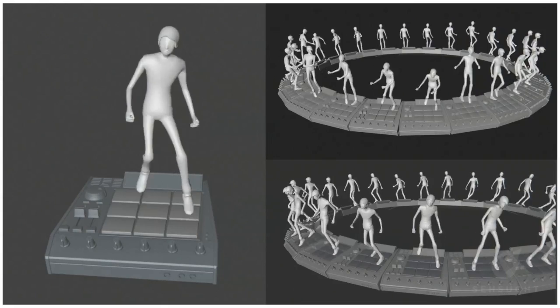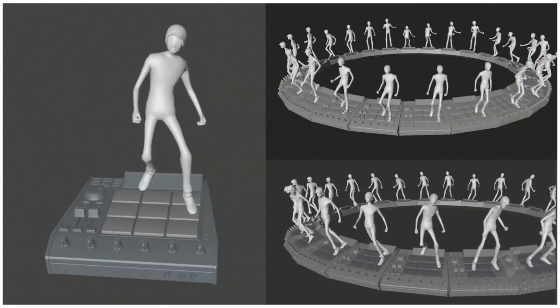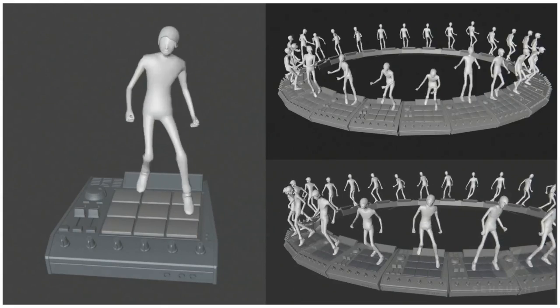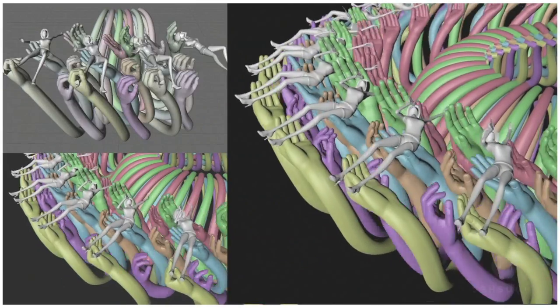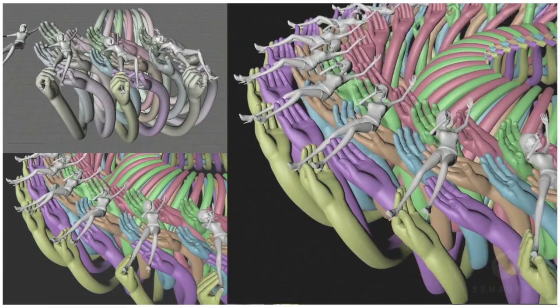Maxwell has a great online material library, which is an amazing resource. You can type from inside your 3D tool, search by rating — it's like Amazon — and you just throw it on the model and it works. It's pretty amazing.